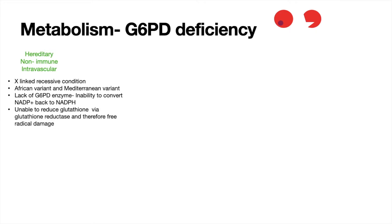Looking at the disease profile, this is an X-linked recessive condition, which means it's going to be mainly affecting boys and males. The condition has two variants: an African and a Mediterranean variant, and looking at the pathophysiology, it's all to do with a lack of the G6PD enzyme.